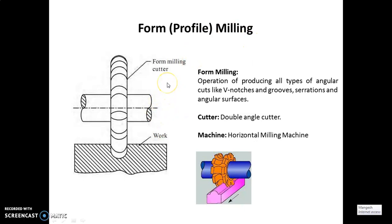Next is form milling, also called profile milling. Profile milling cutters have a curved tooth outline of the same shape as the profile of the workpiece. In this operation, we produce angular cuts like V-notches, grooves, serrations, and angular surfaces. Common shapes include concave, convex, and corner rounding cutters. Gear milling cutters are a kind of form milling cutter used to machine any standard gear tooth. Double angle cutters are used on horizontal milling machines.